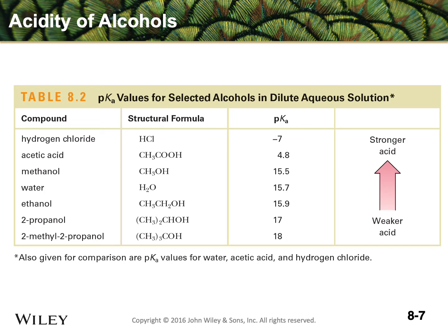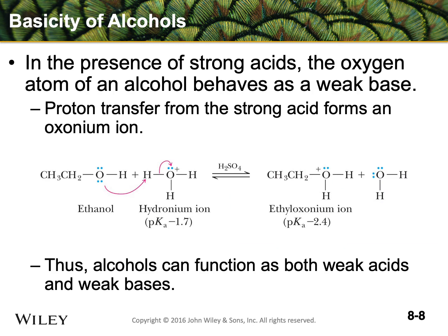As we extend the carbon chain, it becomes harder and harder for the alcohol to dissolve in water, and we are also decreasing its acidity because it has less hydrogen bonding. Alcohols can also act as bases because the lone pair on the oxygen can accept a proton. Therefore, strong acids can transfer a proton to the lone pairs on the oxygen, giving us an oxonium ion. So alcohols can both act as weak acids by donating a proton, or as weak bases by accepting one.